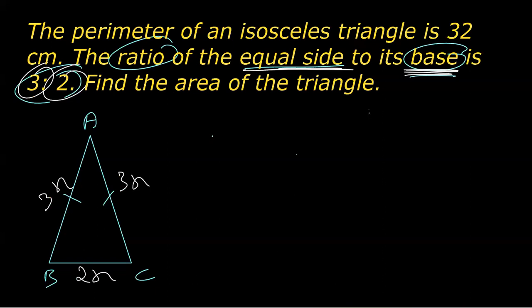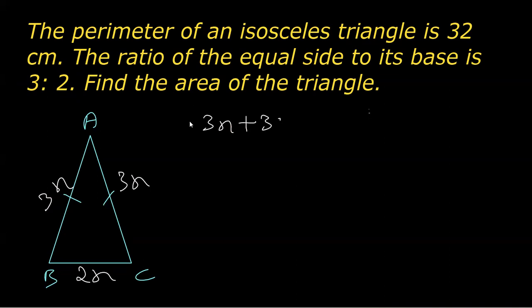Further, we know that the perimeter of this figure is given. The perimeter, as you know, is the sum of all three sides of a triangle. So if I find the perimeter, the sum of these three sides, that is 3x plus 3x plus 2x is equal to 32 centimeter. Now, 3 plus 3 is 6, 6 plus 2 is 8. So this is 8x is equal to 32. That means x is equal to 4 centimeter.